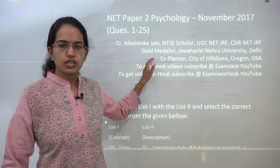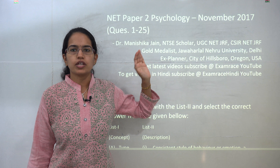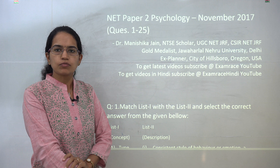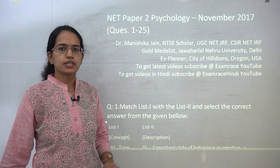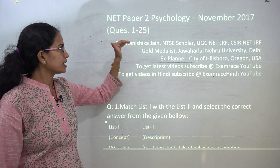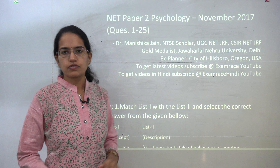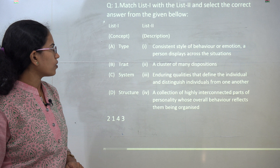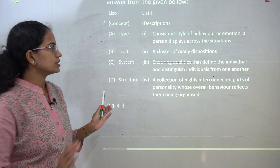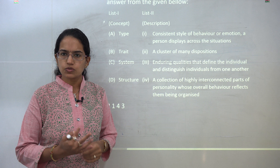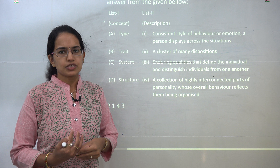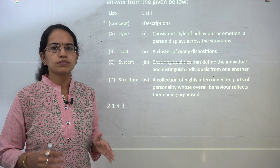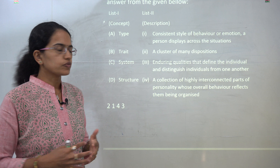Welcome. We will start with the psychology NET paper for November 2017, beginning with Paper 2 and moving forward to Paper 3. Today we will be covering the first 25 questions for Paper 2. The very first question talks about concepts and descriptions. Most of the questions were direct, based on definitions, so if you are thorough with the concepts, the questions were easy.